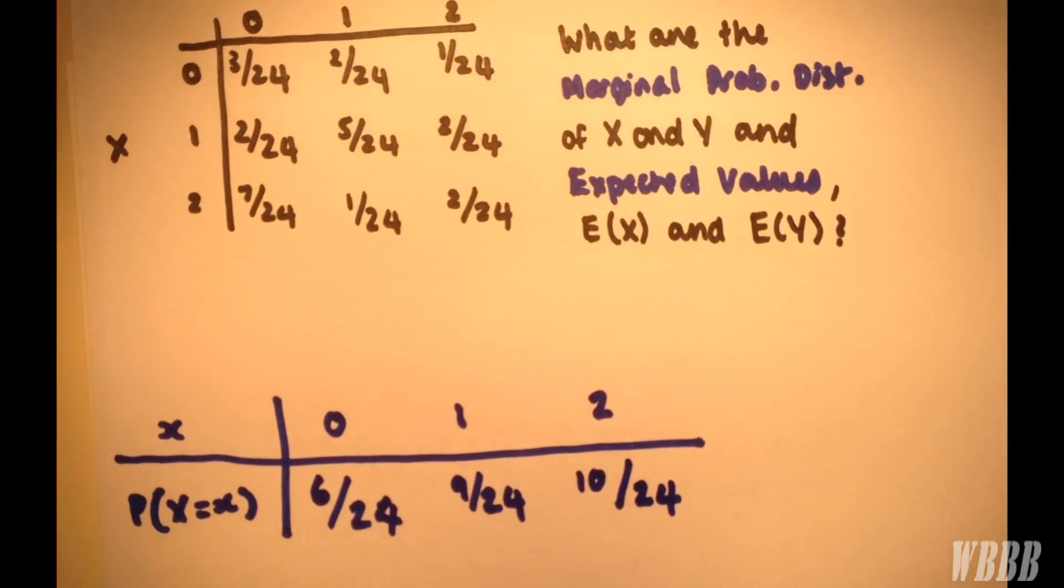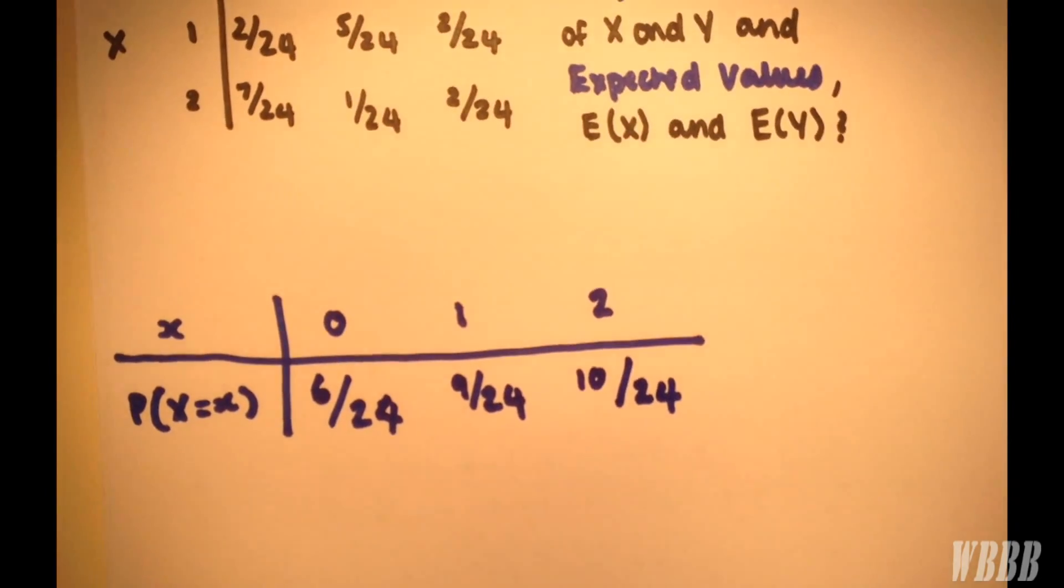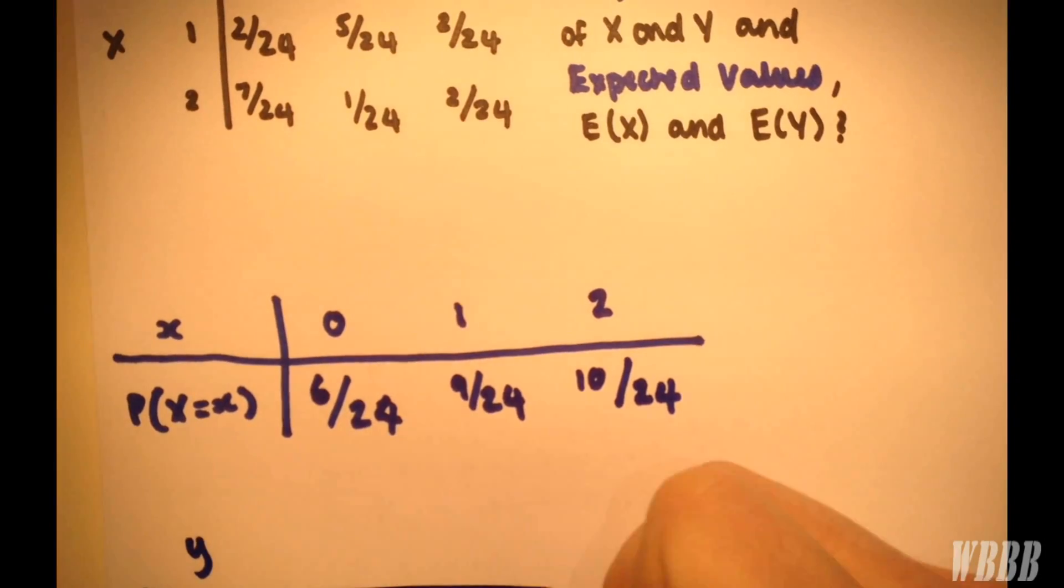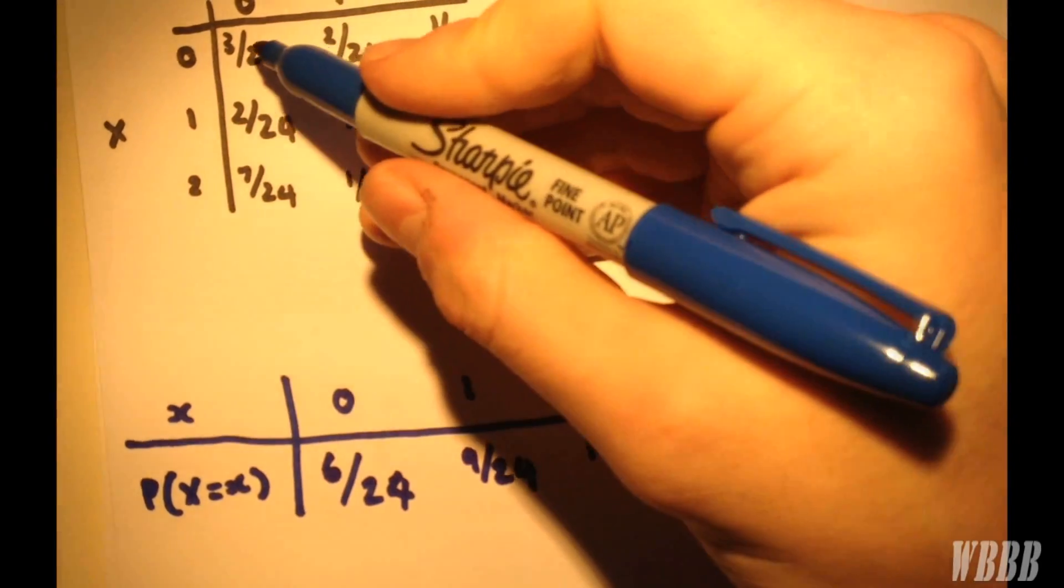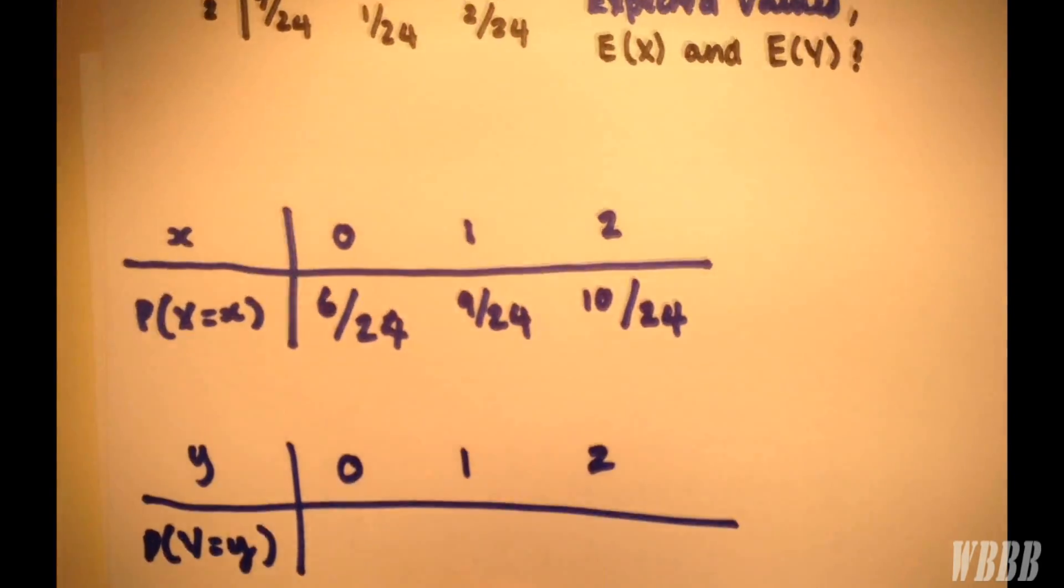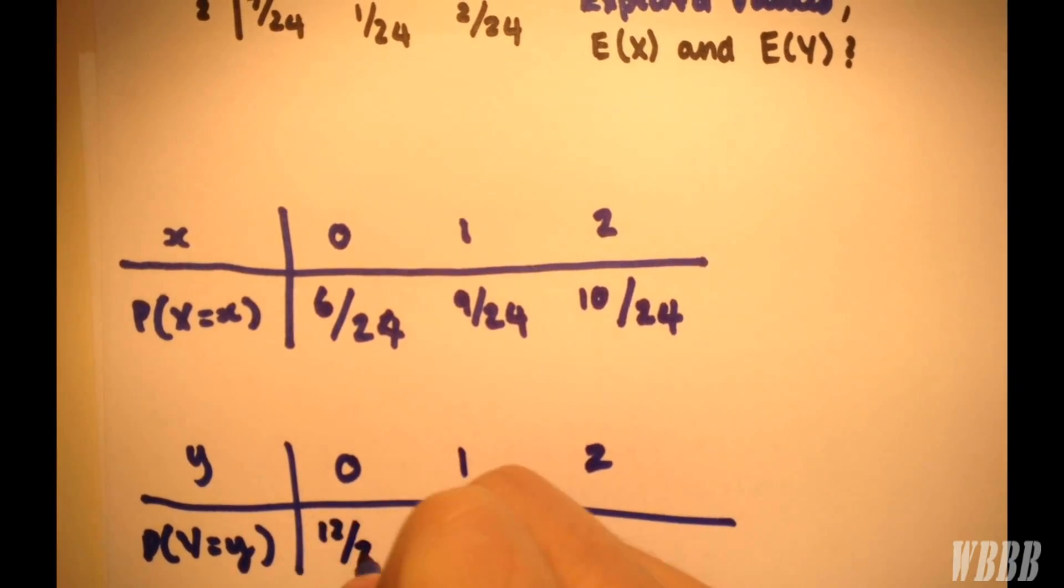And of course, to find y, we do the same but with vertical columns considered. So 0, 1, 2. So for 0, we have 3, 2, and 7, giving 12 over 24.